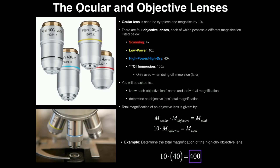Now let's talk about the ocular and objective lenses. Anytime you look through the microscope, you're going to see through the ocular lens always, and it always has a magnification of 10 times. These microscopes have twofold magnification — the first layer is the ocular lens, and the second layer is the objective lenses. Each of these objective lenses has a color, and these are the same colors as the microscopes in the lab, with a corresponding name and magnification.